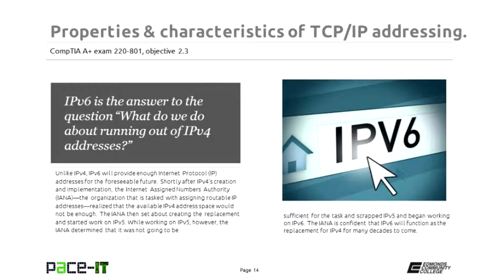They started working on IPv5, but discovered that IPv5 — which would have been a 64-bit addressing scheme — was not going to be sufficient. So they scrapped IPv5 (we've never seen it in the wild) and started working on IPv6. They're pretty confident, with good reason, that IPv6 would be sufficient for many, many years to come.